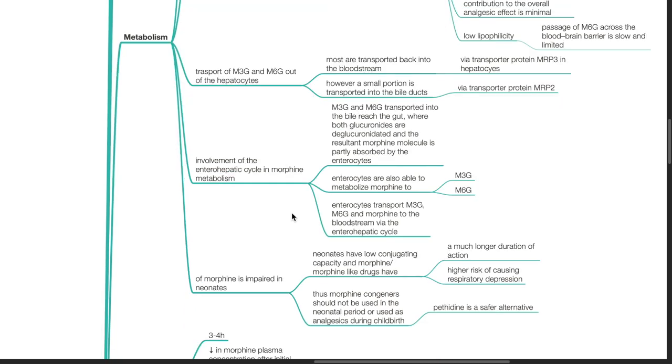Involvement of the enterohepatic cycle in morphine metabolism. M3G and M6G transported into the bile reach the gut where both glucuronides are deglucuronidated and the resultant morphine molecule is partially absorbed by enterocytes. Enterocytes are also able to metabolize morphine to M3G and M6G. Enterocytes transports M3G, M6G and morphine to the bloodstream via enterohepatic cycle.